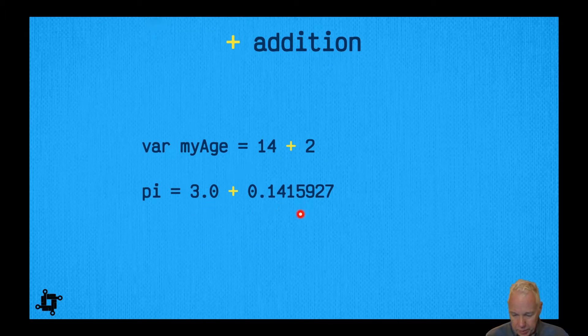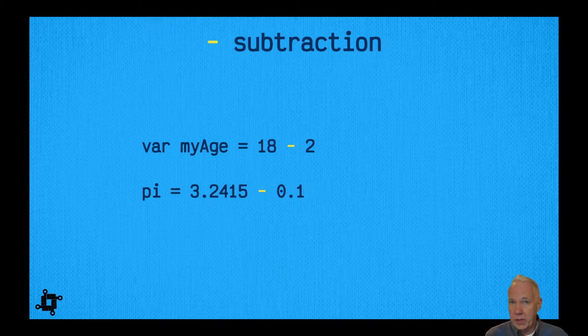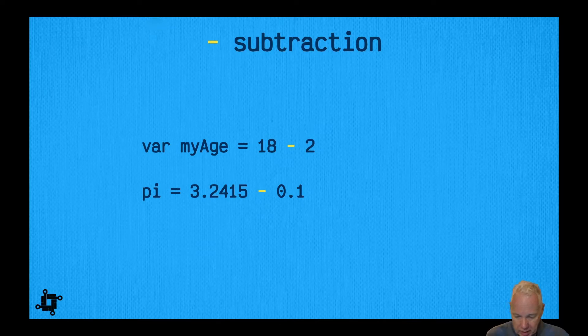Subtraction is very similar, right? We use the minus sign or the dash. Here we're saying 18 - 2, which gives us 16 as the value that's going into this variable. Here we're starting out with 3.2415, subtracting 0.1, and we get the result in pi. So that is subtraction.